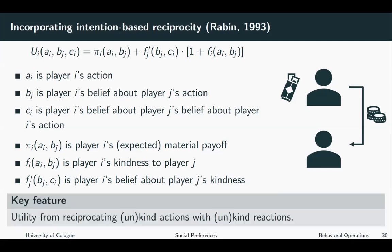The key feature is the utility from reciprocating kind or unkind actions. My kindness can be either positive when my action is kind, or negative when it's unkind. And also the expression for the other player can be either positive or negative, which means that if the other's kindness is negative, I want to be negative too; but if it's positive, I want to be positive as well. So Rabin incorporated that I want to return kind actions with kind behavior and unkind actions with unkind behavior.